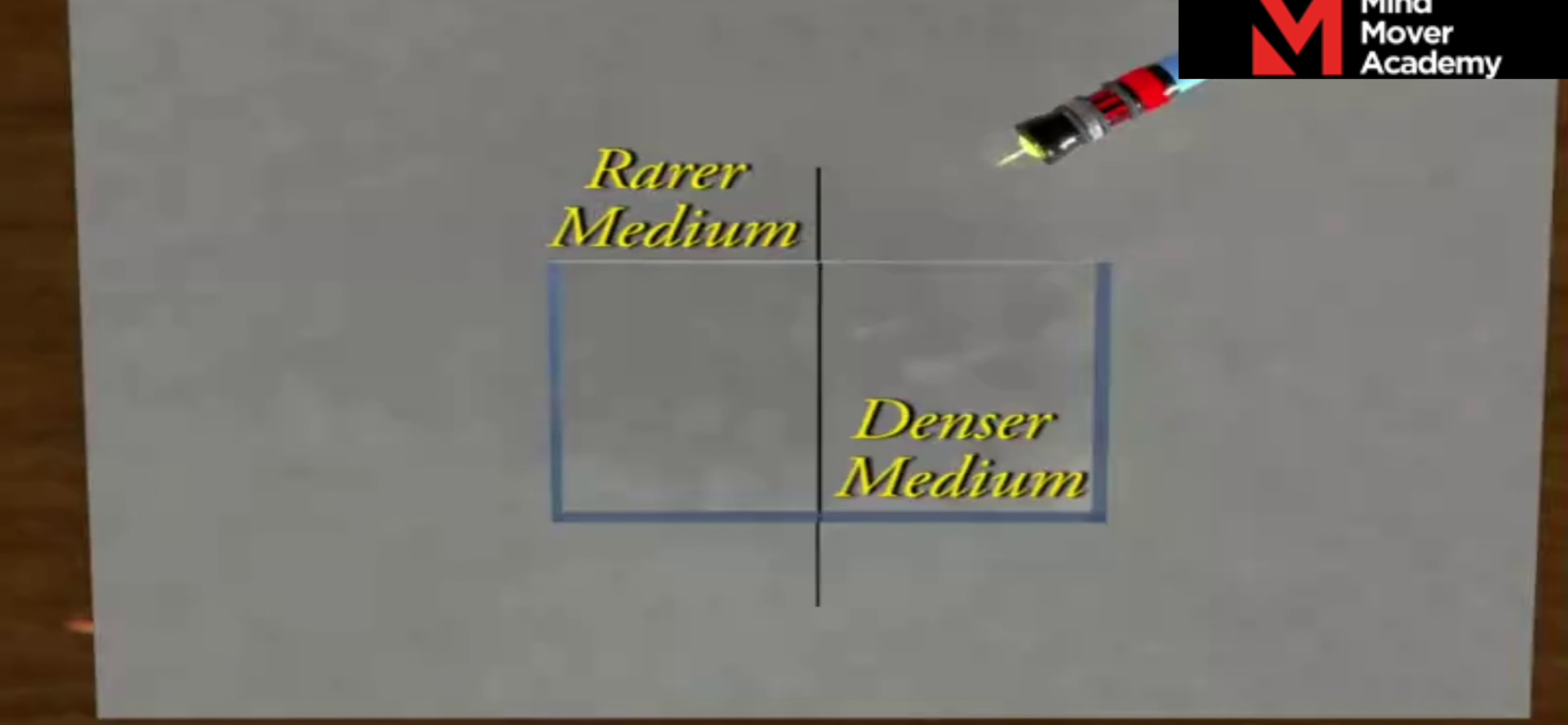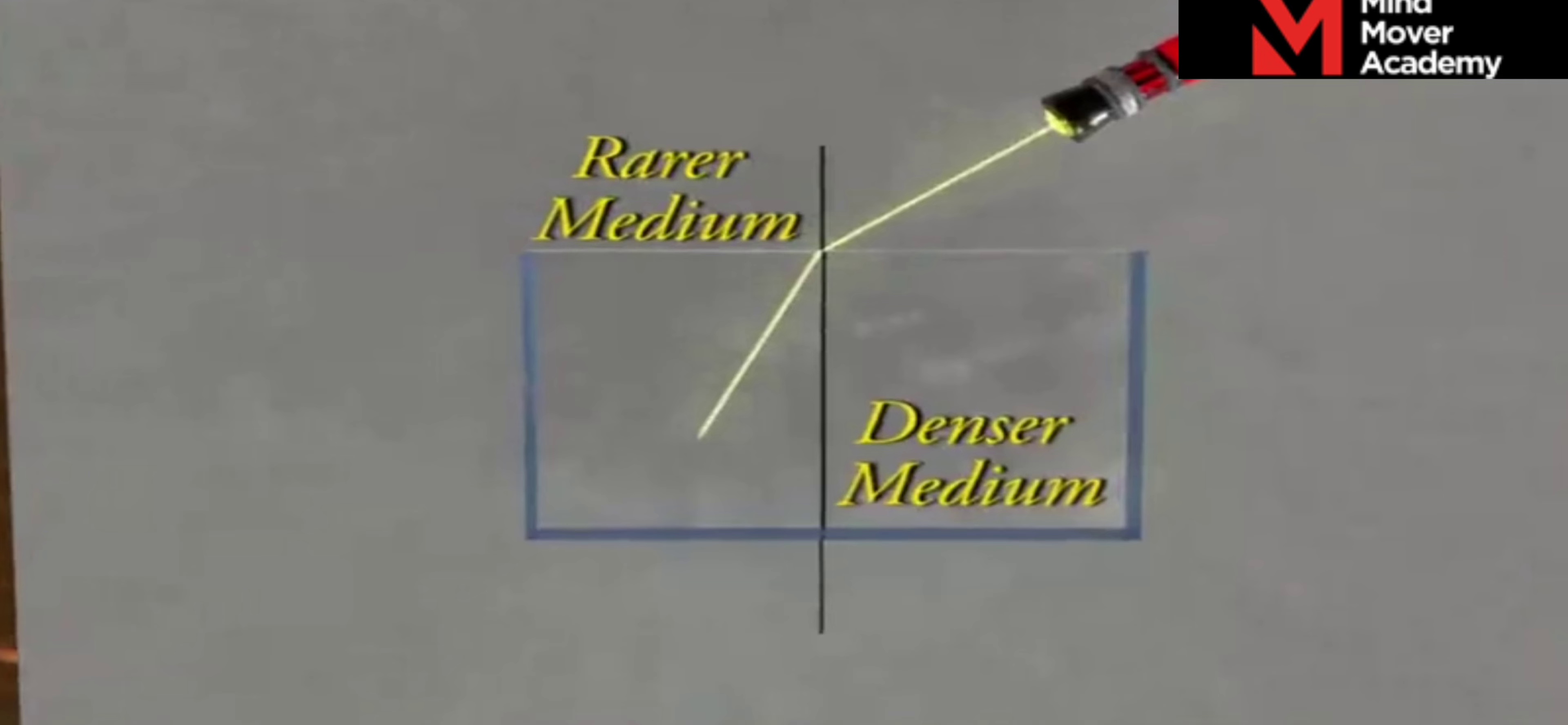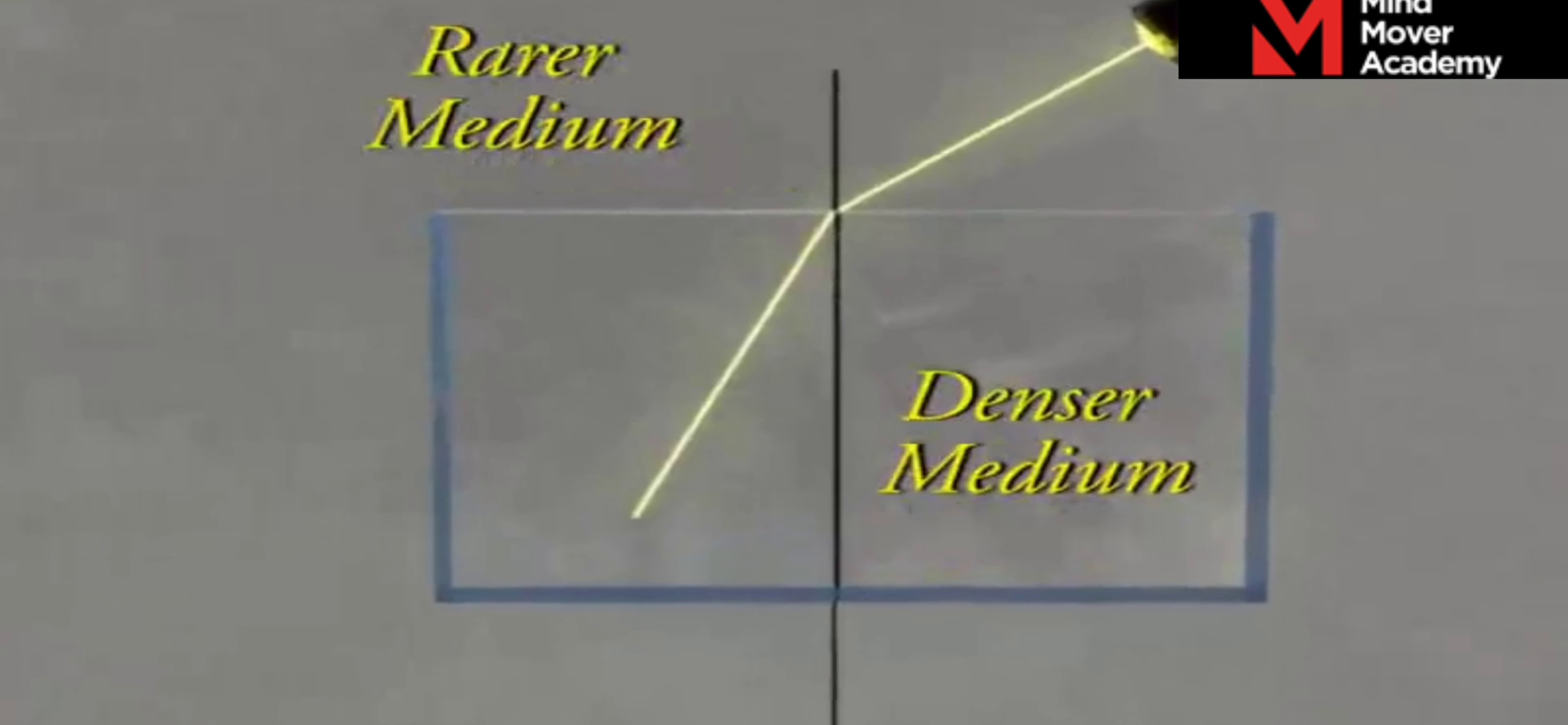Refraction occurs right at the interface of the two media and the angle of bending of a ray would depend upon the difference of speeds of light in the two media.